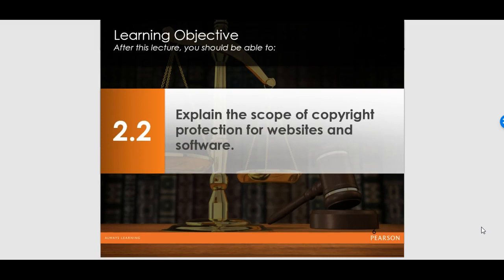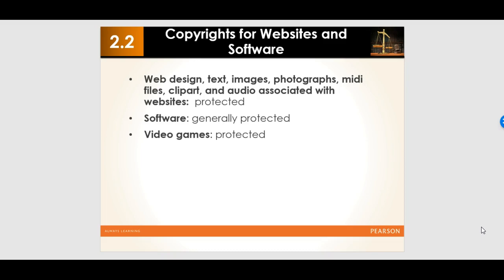Moving deeper into copyright — the first type of IP we examine in this course — copyright gives authors protection for their web design, since coding a website constitutes an original creative work protected by copyright. Texts, images, photographs, and audio on your website are all protected by copyright, as long as they are original. If you are using content created by someone else, it may still be protected by copyright, but that protection belongs to someone else.